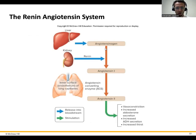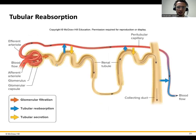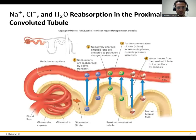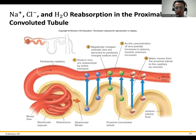So renin is secreted by the kidneys, there are a couple of intermediates that eventually turn into angiotensin II, aldosterone is secreted, and then it helps reabsorb salts at the distal convoluted tubule.